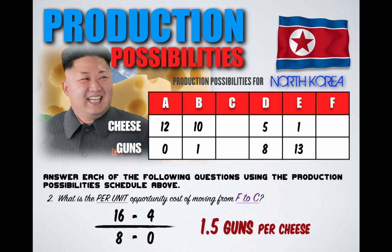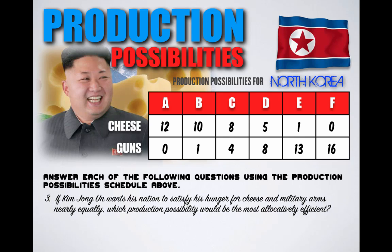In determining the per unit opportunity cost of shifting production from point F to point C, we end up with 12 over 8, meaning per unit of cheese produced, the opportunity cost is one and a half guns. That's some expensive cheese. Question number three: if Kim Jong-un wants his nation to satisfy his hunger for cheese and military arms nearly equally, which production possibility would be the most allocatively efficient? Because Kim Jong-un makes all the decisions in this command economy, he wants as close to an equal amount of cheese and guns produced at one time. According to the schedule, the most allocatively efficient combination would be point D, where North Korea would produce eight guns and five units of cheese.